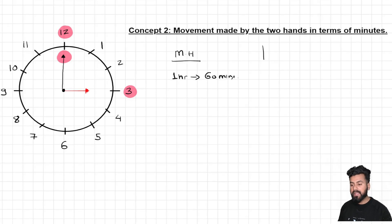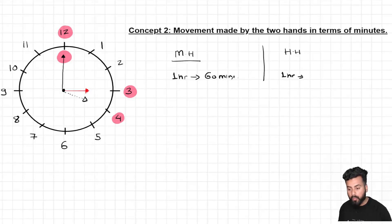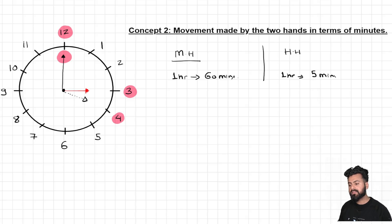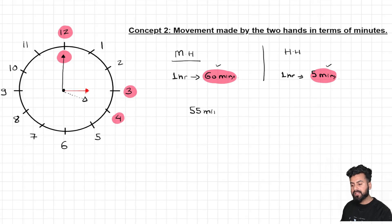Now, if I ask you to calculate the distance covered by the hour hand in the same one-hour duration — after one hour, the hour hand would be pointing at 4. That is a one-gap distance, and the value of one gap in terms of minutes is 5. So in one hour, the hour hand only moves by 5 minutes, since the speed of the hour hand is slow. The difference between the distance covered by the minute hand and the hour hand is 55 minutes — the minute hand has covered 55 minutes of extra distance.